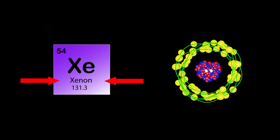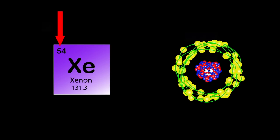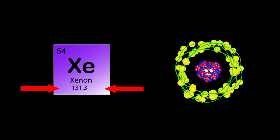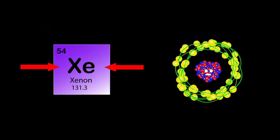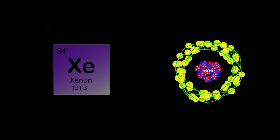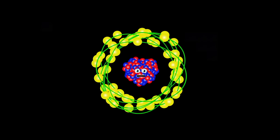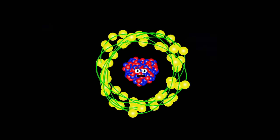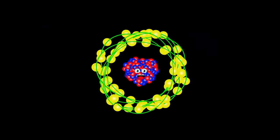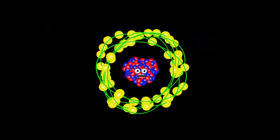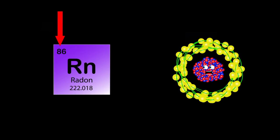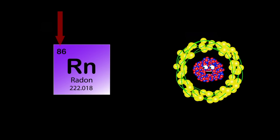Xenon is my name. My atomic number is 54, my atomic mass is 131, my symbol is Xe. I produce a brilliant white flash of light when excited electrically, and I'm widely used in strobe lights.